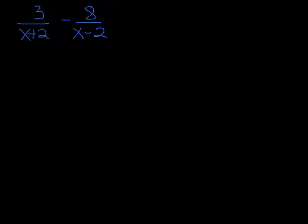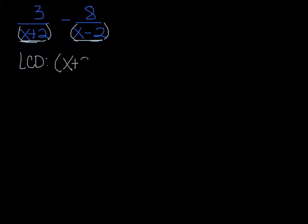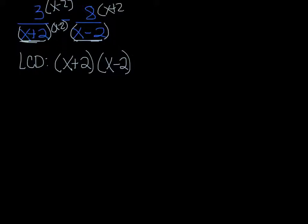Now we have 3 over x plus 2, minus 8 over x minus 2. These denominators are different, and because they are adding and subtracting, you have to keep them as a whole group — this whole group and this whole group are completely different numbers. So our lowest common denominator is going to be x plus 2 times x minus 2 — one of each. That means I'm going to have to multiply the first fraction by x minus 2 on top and bottom, and the second one by x plus 2 on top and bottom, to give us that common denominator.